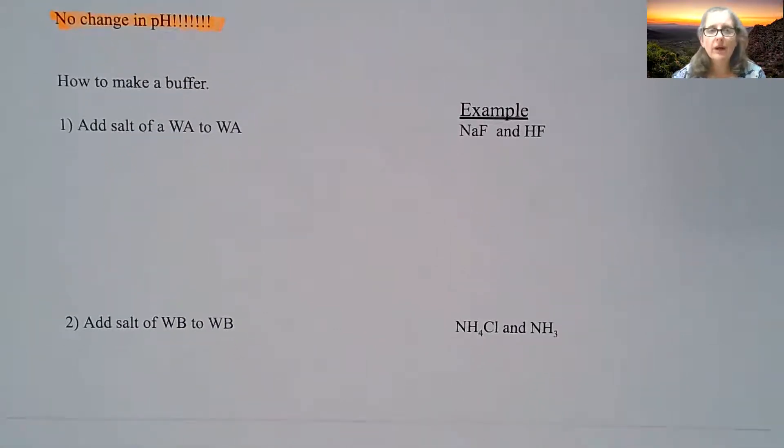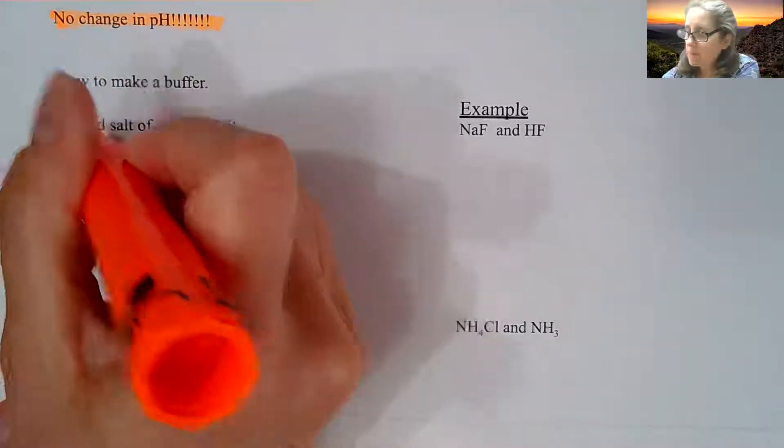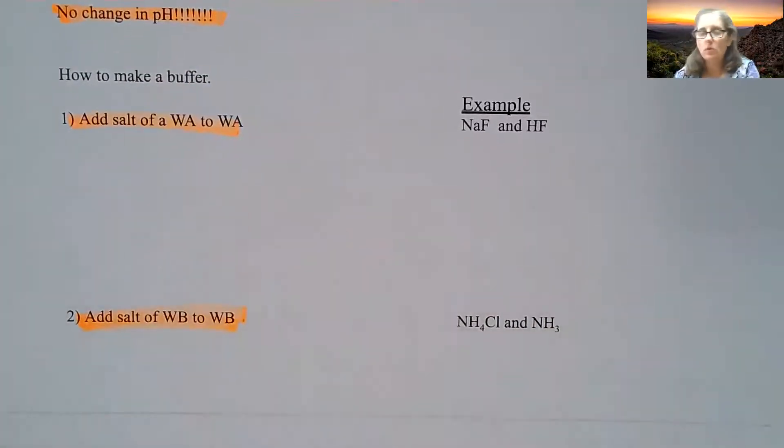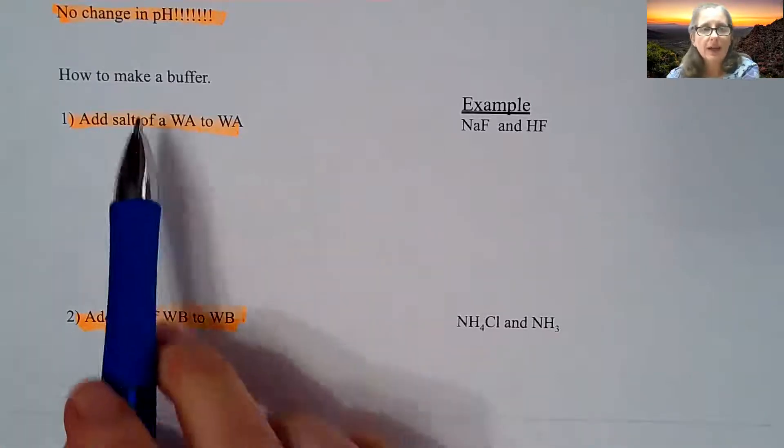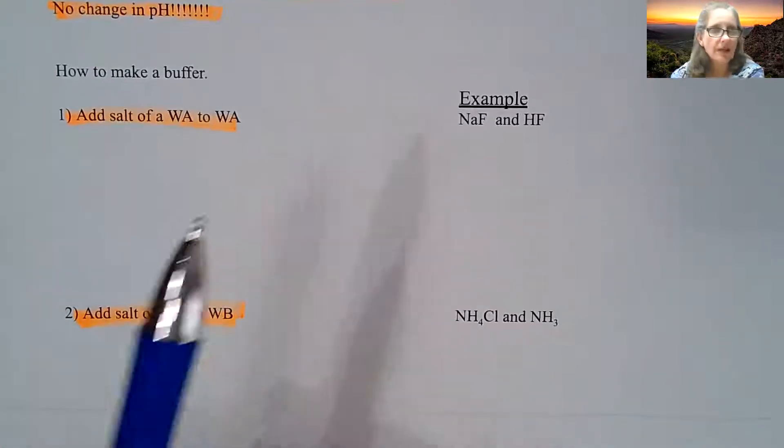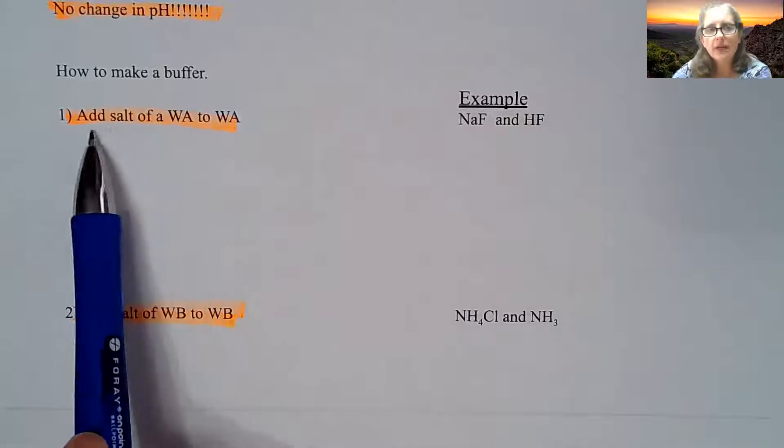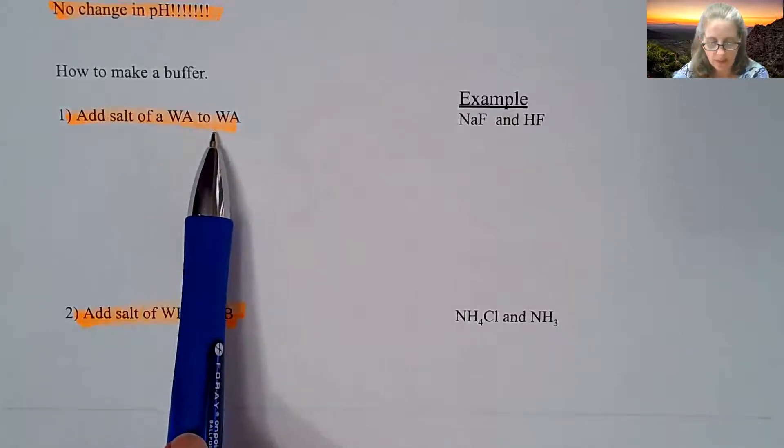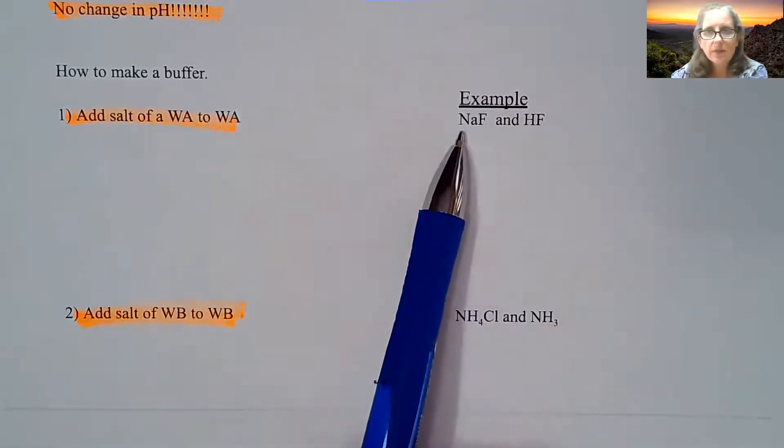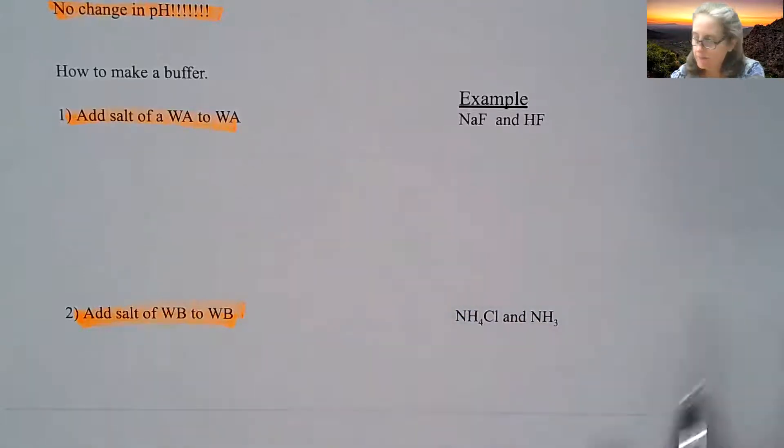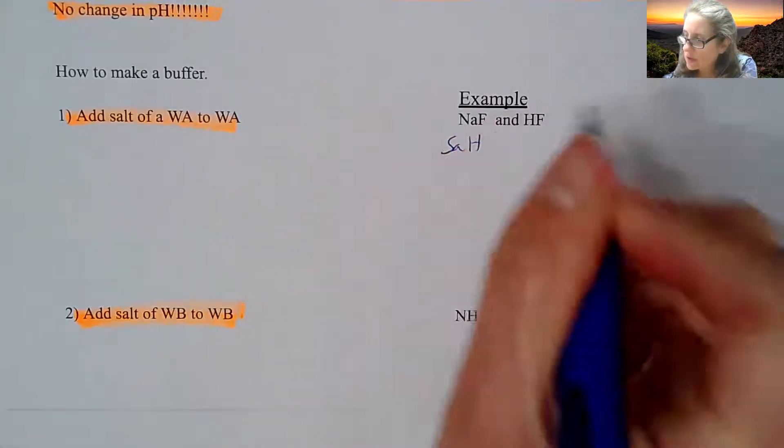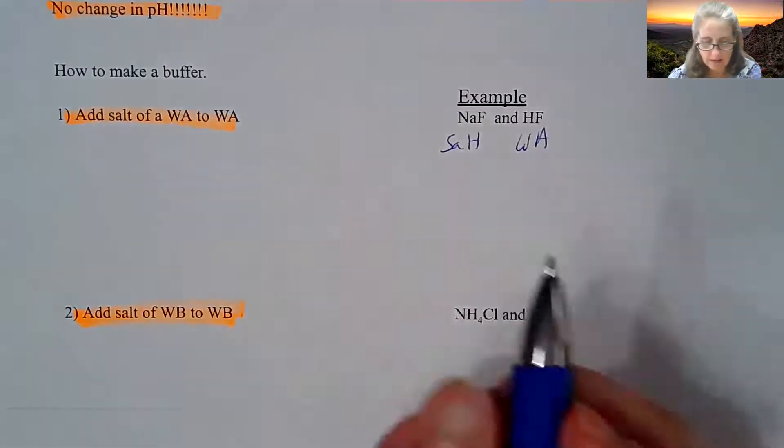So how do you actually make a buffer? For number one and number two are going to be the big ones that you can easily make buffers with. Adding a salt of a weak acid to a weak acid. So the easiest way to make a buffer is to add a salt of a weak acid to a weak acid. For example, I have NaF and HF.